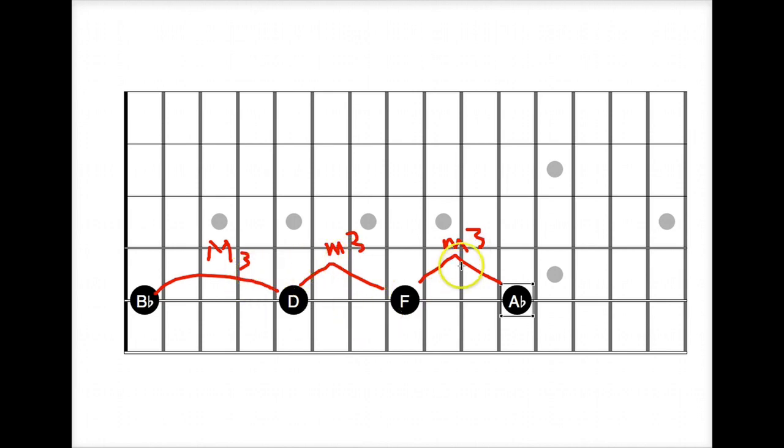So major third, minor third, minor third, that is your dominant seven chord formula.